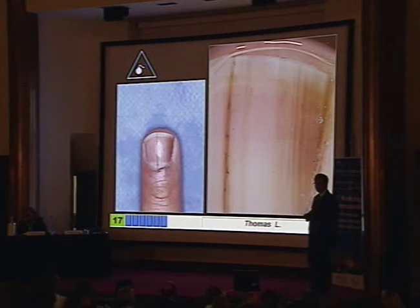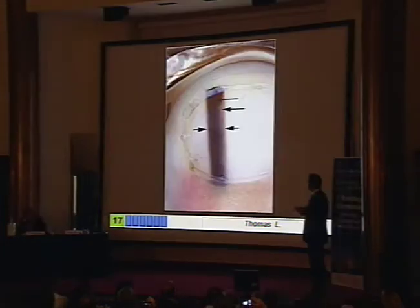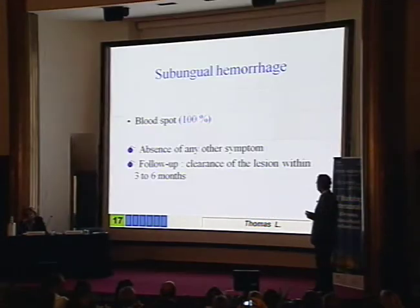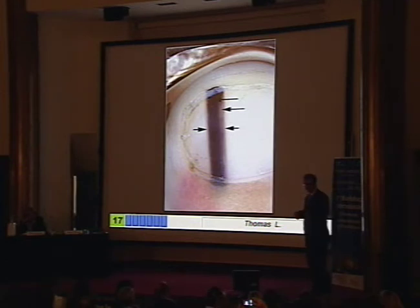So always use your dermoscope when looking at the nail. Melanocytic nevus is opposed to melanoma with a regular pattern — we have seen many images of that. In our view, it is not necessary to take a biopsy of these regular lesions; we can save the patient's hands and toes and not perform painful surgery.